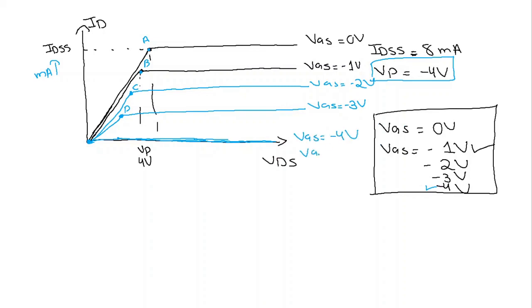For VGS equal to Vp, from the start the saturation level will be reached, there will be no linear region, and from the start we will have 0 milliampere current. The saturation region will be reached from 0. That is why when we increase VDS further, there will be no effect on ID, and it will be 0 milliampere throughout.